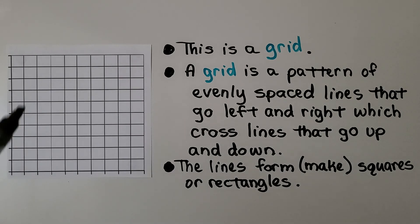This is a grid. A grid is a pattern of evenly spaced lines that go left and right, which cross the lines that go up and down. And the lines form, that means they make squares or rectangles.